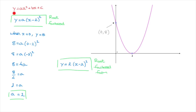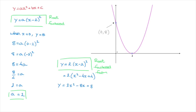Remember, we wanted the equation in the form ax squared plus bx plus c. To do that, we open up the parentheses and distribute the 2: y equals 2 times (x squared minus 4x plus 4). Distributing the 2 leads to the answer: y equals 2x squared minus 8x plus 8. We now have this parabola's equation.